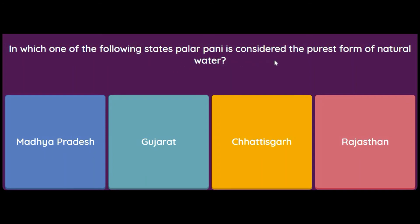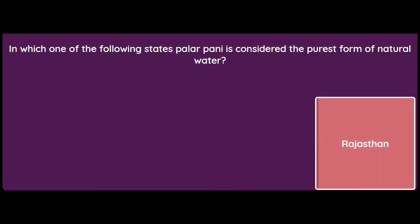In which one of the following states is Palar Pani considered the purest form of natural water — Madhya Pradesh, Gujarat, Chhattisgarh, or Rajasthan? The answer is Rajasthan. In Rajasthan, rainwater collected in underground Tankas is called Palar Pani, and it is considered the purest form of natural water.